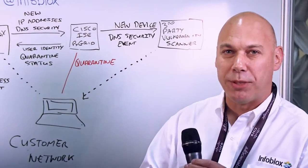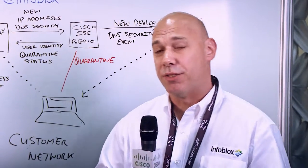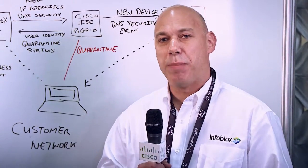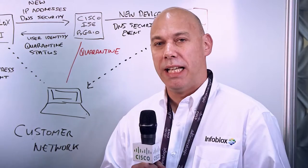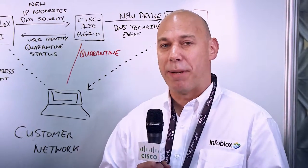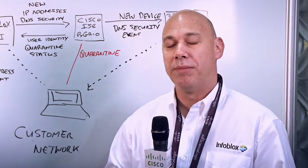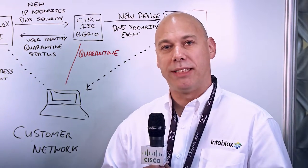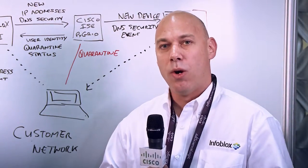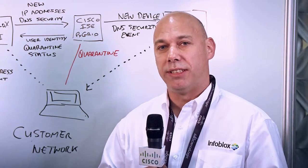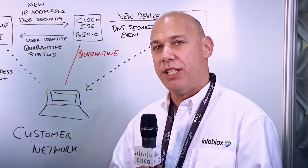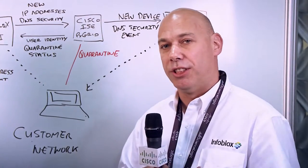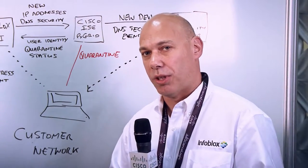In terms of the APIs we typically use, there are really three. The first API we use is the dynamic topic API. That allows us — every time a new device is either created or an IP address is assigned — to share that information dynamically out to the Cisco ISE infrastructure.